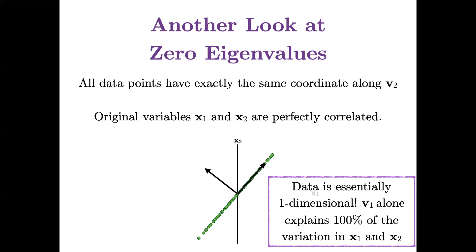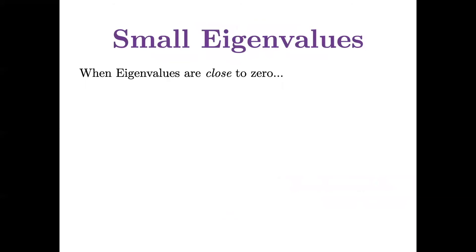Now this will only happen, honestly, when you've made a mistake. When you've put the study time in hours and the study time in minutes into the same data set. Or if you put for rectangular fences the length, the width, and the perimeter, right? That's where you get perfect multicollinearity. But it's very common to have small eigenvalues.